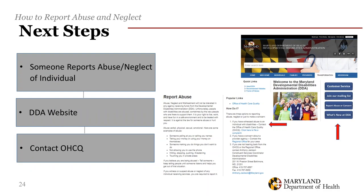Another option is to report the incident via the DDA website. On the DDA homepage, in the far right-hand corner, there are four rectangles, and one says 'Report Abuse or Concern.' Once you click on it, the Report Incident screen will pop up. On the right side of the page under Popular Links is 'How Do I?', which instructs the submitter to contact the Office of Healthcare Quality. You then click on the link to file the complaint.